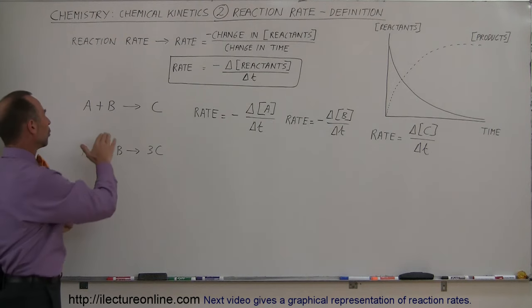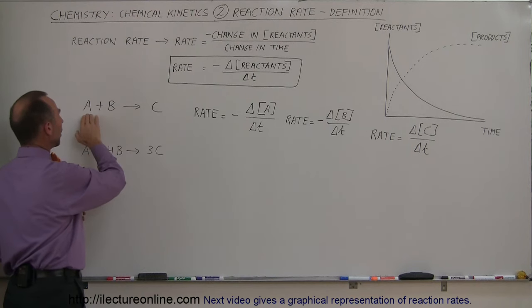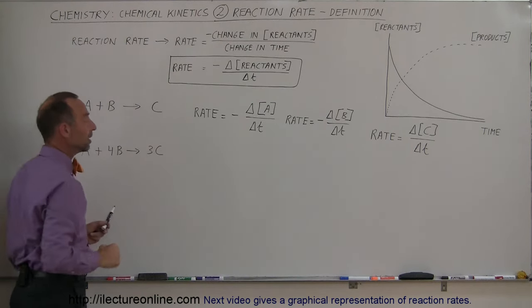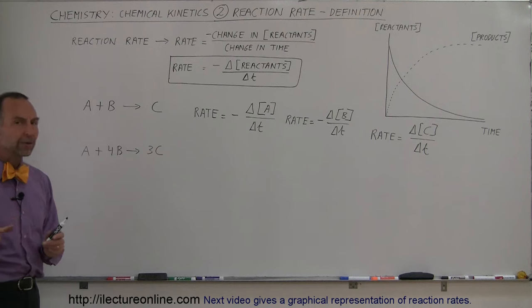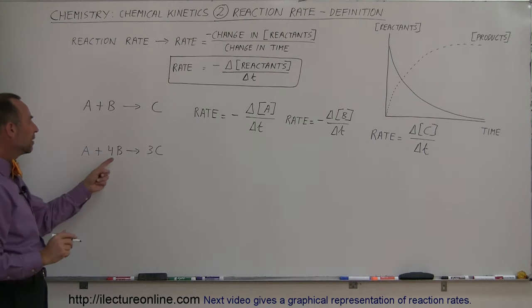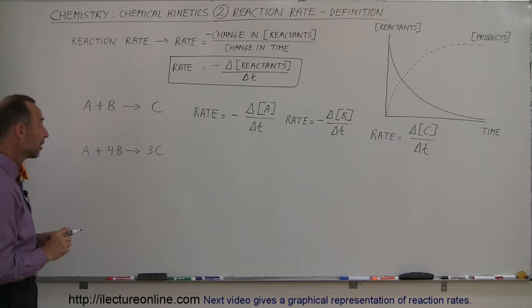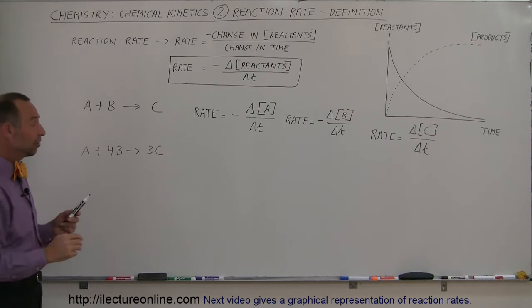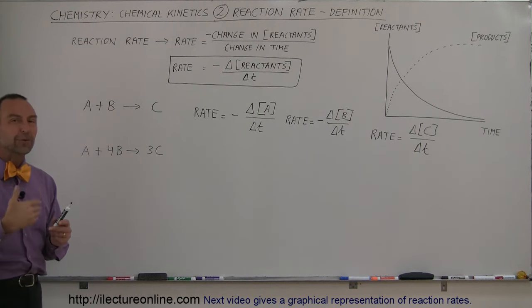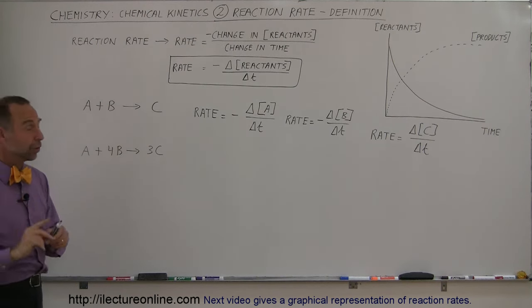But it's not always the case that you need just one of A and one of B to make one of C — sometimes you need more of one reactant than another. So how do we express the rate then? If you need four times as much of one reactant compared to another, that reactant will be consumed four times as fast. Therefore, the rate needs to be expressed in terms of four times the concentration of that reactant versus one time the concentration of the other.